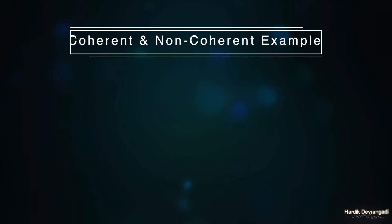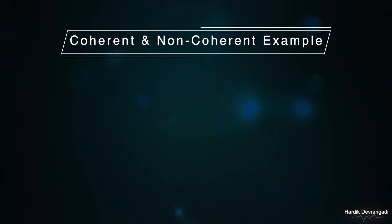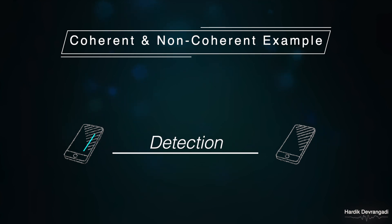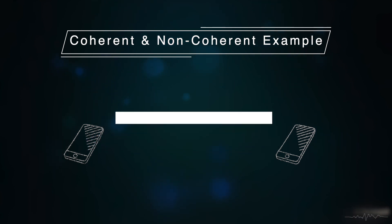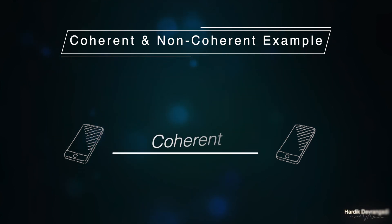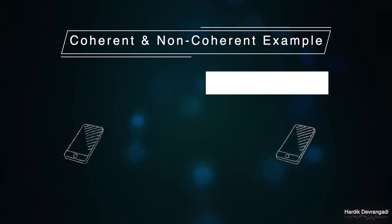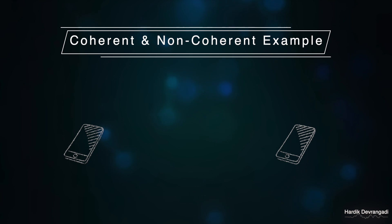Let us consider an example to understand where coherent and non-coherent detection schemes are used. In case of cellular communication, at the time of connection, the receiver operates in non-coherent detection mode as the phase of the transmitted signal is not known. Once the phase is identified, the receiver switches over to the coherent detection scheme which has more efficiency because of its lower probability of error.